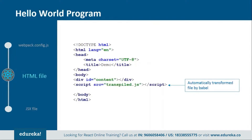Next we have the HTML file. This is a basic HTML file in which we just need to add one div tag and one script tag. Inside the div tag we provide an id so that we can refer to it from the JSX file, and then we have the script tag pointing to the transpiled file that will be created by Babel.